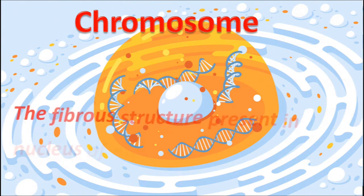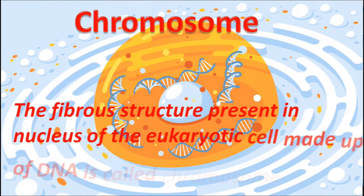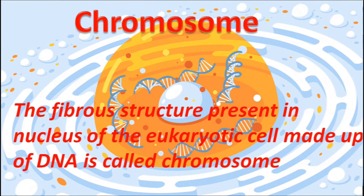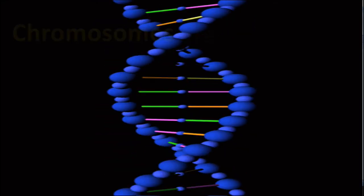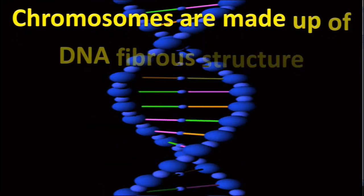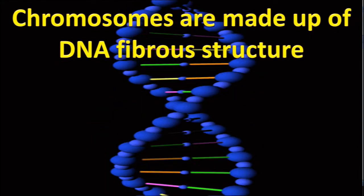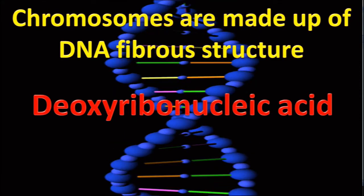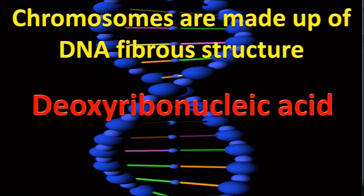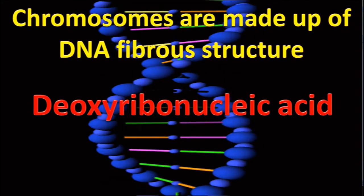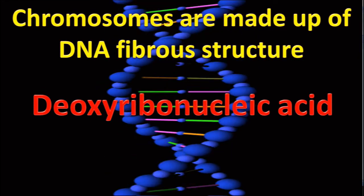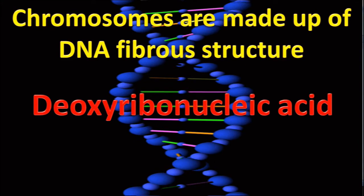The fibrous structure present in the nucleus of a eukaryotic cell, made up of DNA, is called a chromosome. DNA is known as deoxyribonucleic acid, which is the genetic material. A gene, or collection of a certain part of DNA, is called a gene. That gene or group of genes makes up a chromosome.